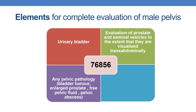In order to assign a complete code, we first have to note down the elements necessary for that particular code. To code 76856, the elements for complete examination or evaluation of male pelvis are as follows: a detailed description of the urinary bladder, evaluation of prostate and seminal vesicles to the extent they are visualized trans-abdominally, and any associated pelvic pathology — for example, bladder tumor, enlarged prostate, free pelvic fluid, and pelvic abscess.